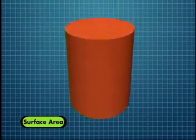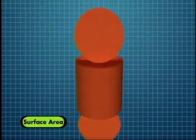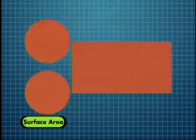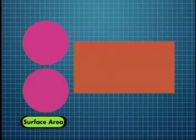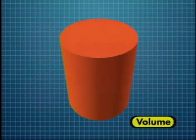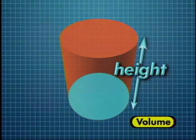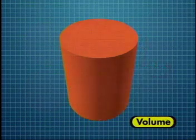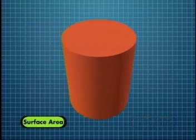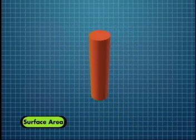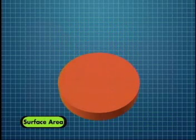The surface area of a cylinder is the sum of the areas of the circles at the top and bottom, and the area of the side. The volume of a cylinder is the area of the circle at the bottom times the height of the cylinder. When the volume is the same, a tall cylinder has less surface area than a wide cylinder.